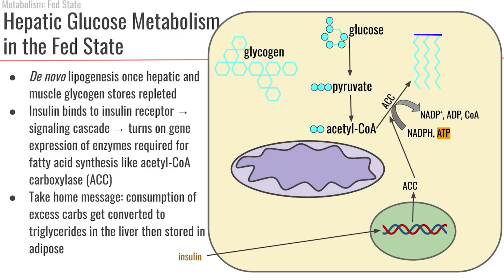Let's look at what happens after we've made enough glycogen. As we've discussed, we have a limited capacity to store glycogen because it's a highly branched, hydrophilic molecule that binds water, making it very heavy. So when we've absorbed more monosaccharides than we can store as glycogen, in this fed state, we start taking those monosaccharides — broken down into acetyl-CoA — and building them into fats through lipogenesis.